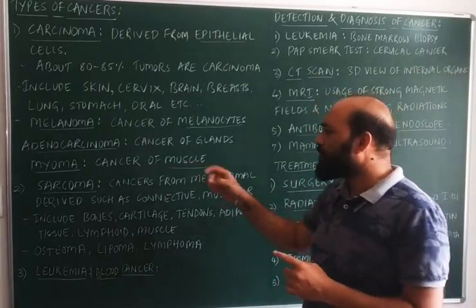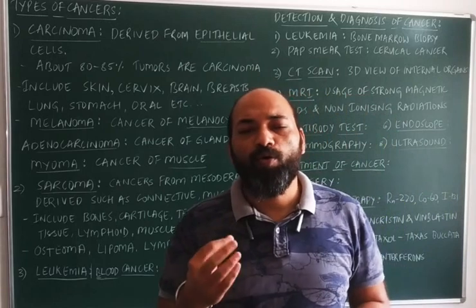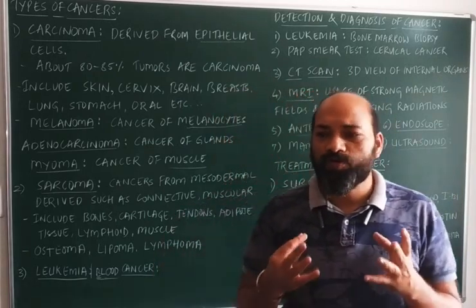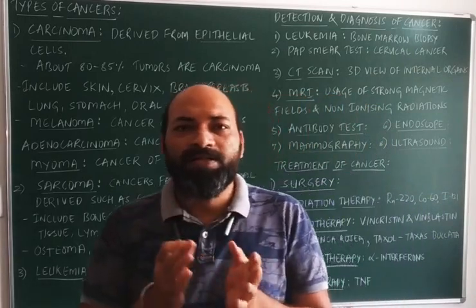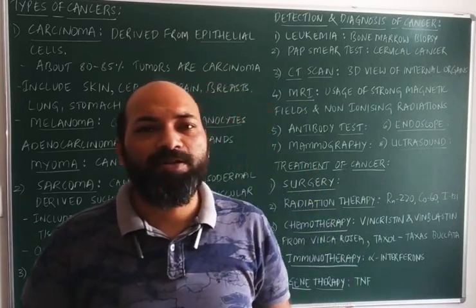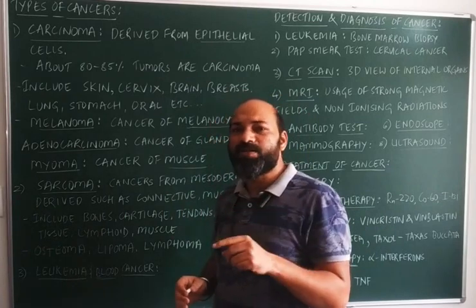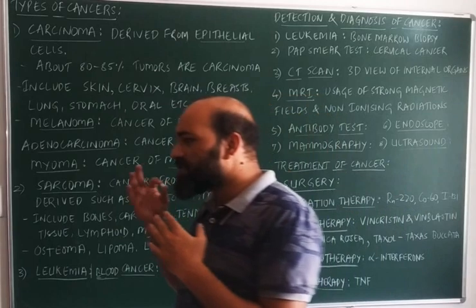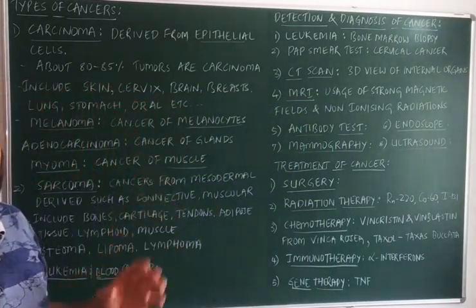In some instances myoma can be a muscle cancer, but not in general. For example, myoma is seen in the ovaries where fibroids are grown. You may have heard about polycystic ovary disorder, where fibroids or cysts are formed in the ovaries — these are nothing but benign tumors, which can be considered myoma. This covers the first type of cancer: carcinoma.